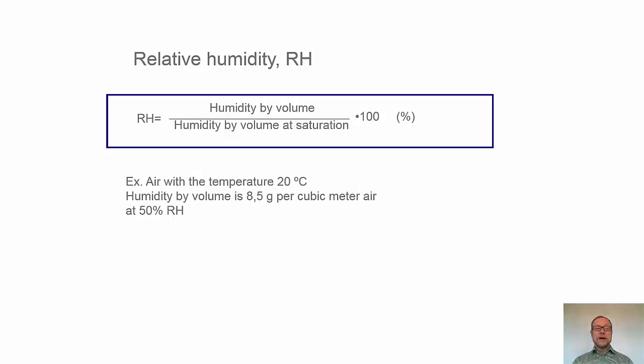As an example, we have air with the temperature of 20 degrees, and if the humidity by volume in the air is 8.5, that's half the amount of what is maximum possible, that means that the RH will be 50%.